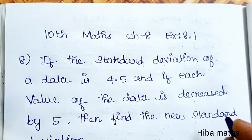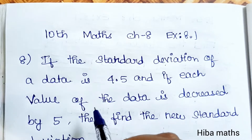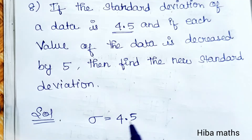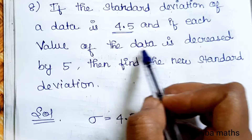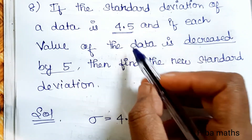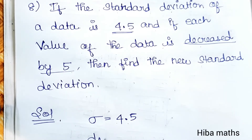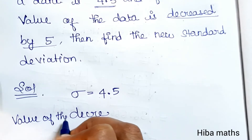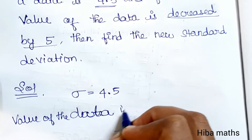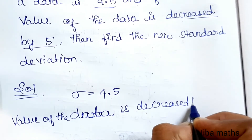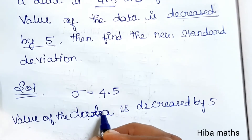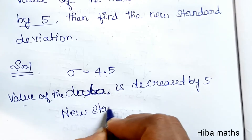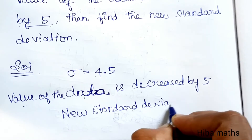Hello students, welcome to Hibamax 10 standard max chapter 8, exercise 8.1. The question is: if the standard deviation of a data is 4.5, and if each value of the data is decreased by 5, then find the new standard deviation.